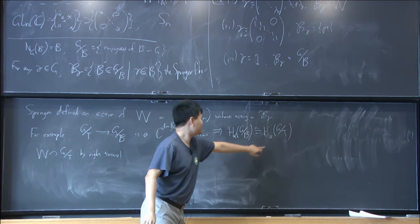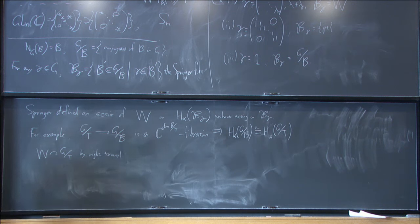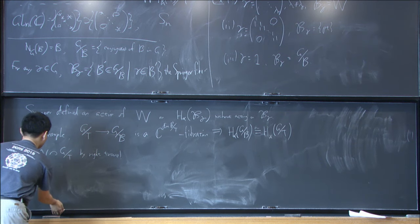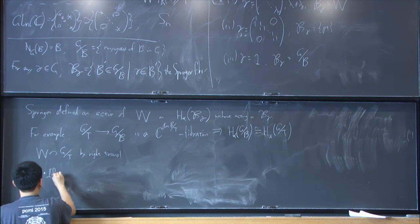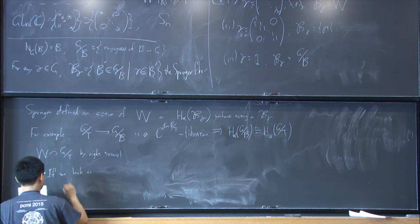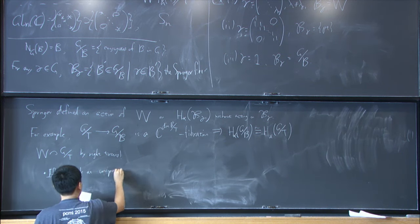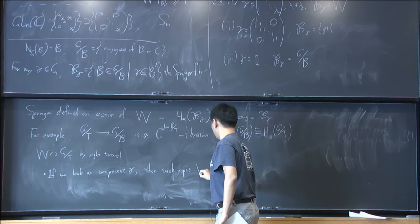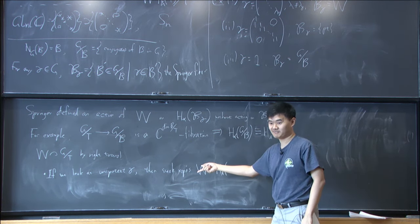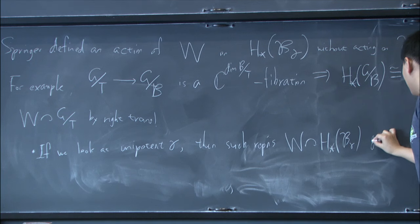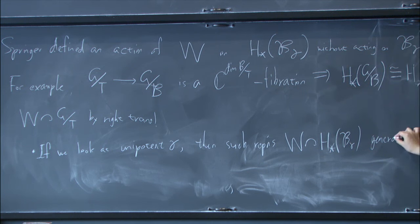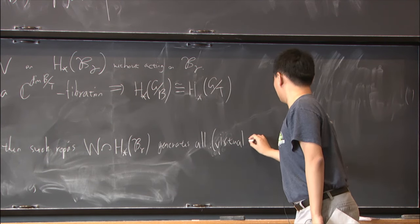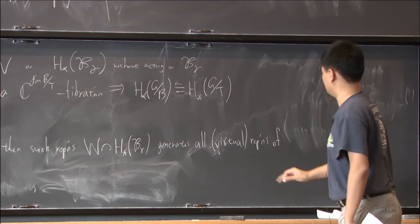So this says the homology of G mod B can be identified as the homology of G mod T. And this time, the Weyl group, so the normalizer of T acts on G mod T by right translation. So the Weyl group acts on the homology of this guy. In a way, for example, it acts on this guy, and then identifies this. So Springer defines an action for any such gamma. And so they are fun. For example, if we look at those gamma that are unipotent, then such representations